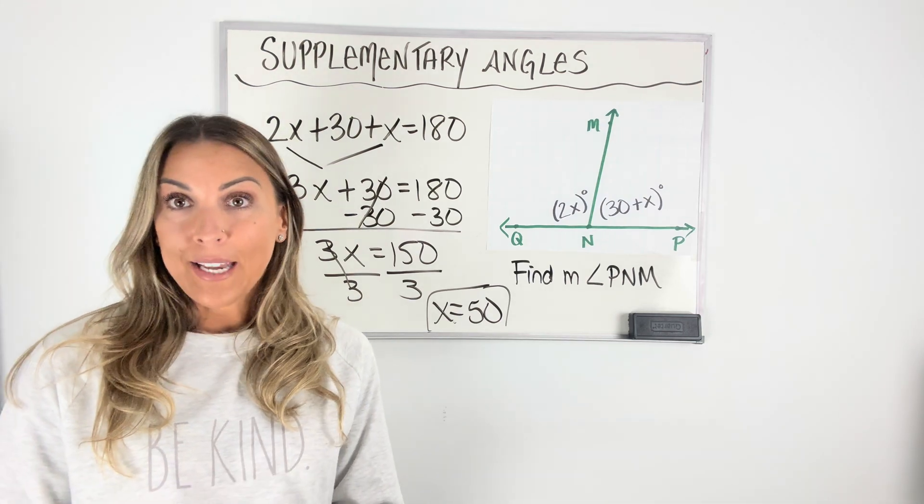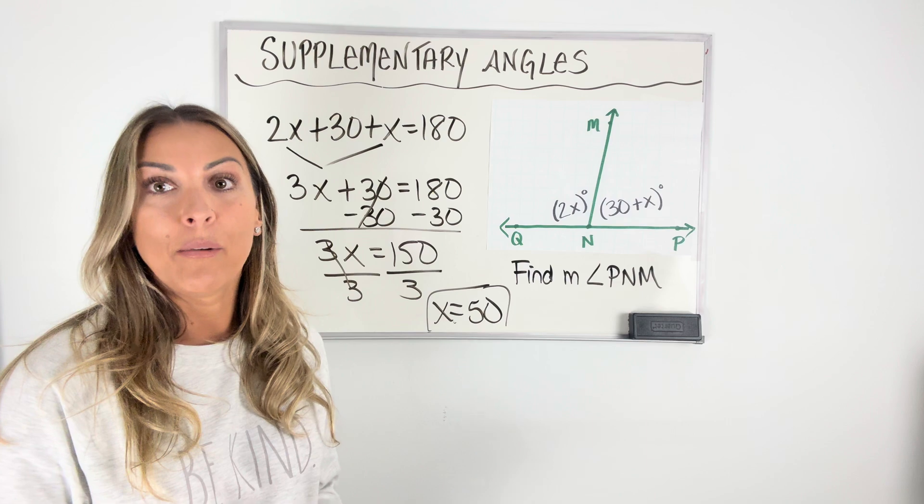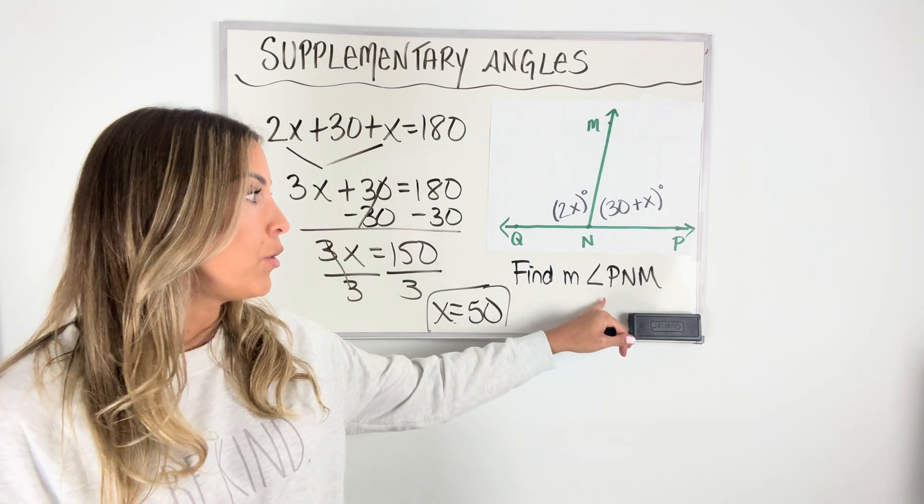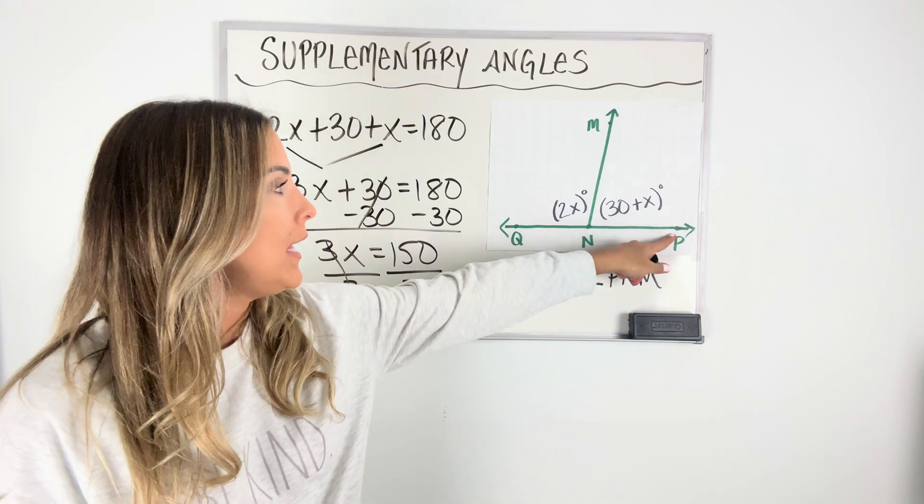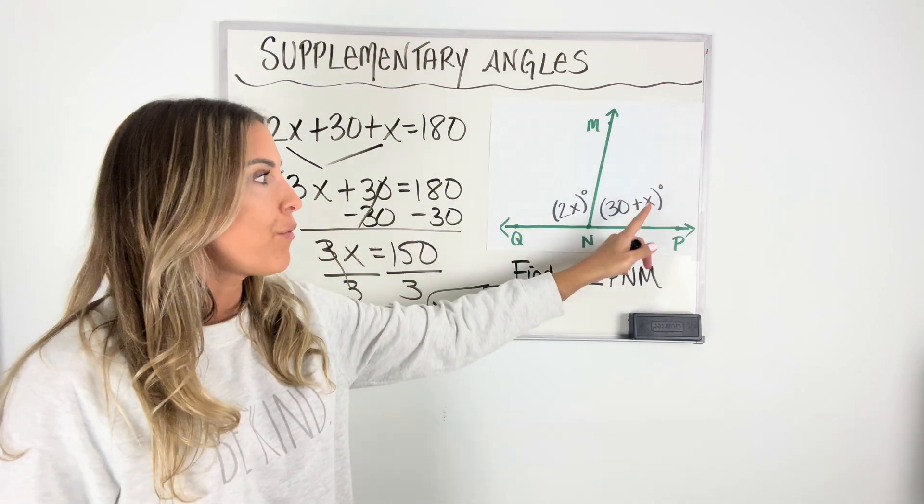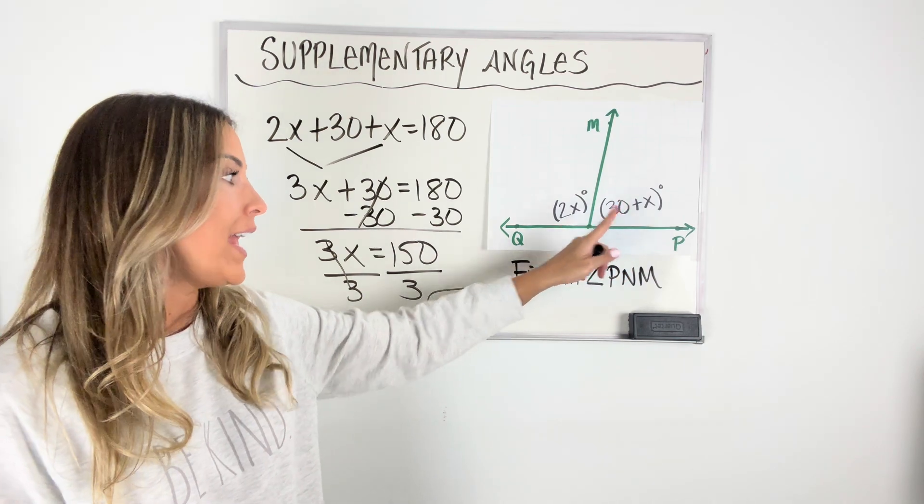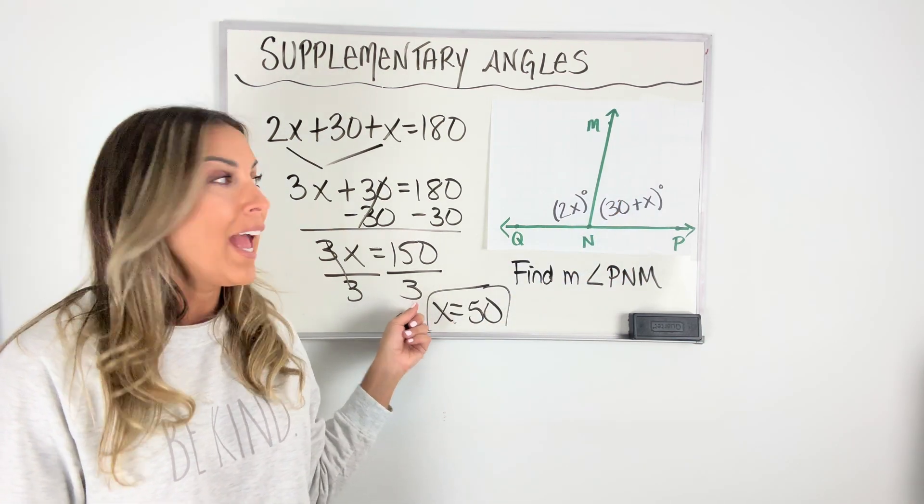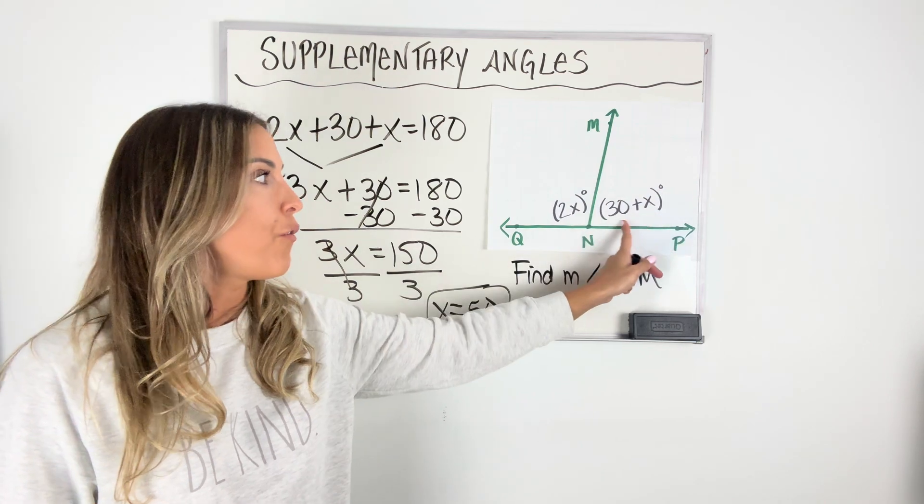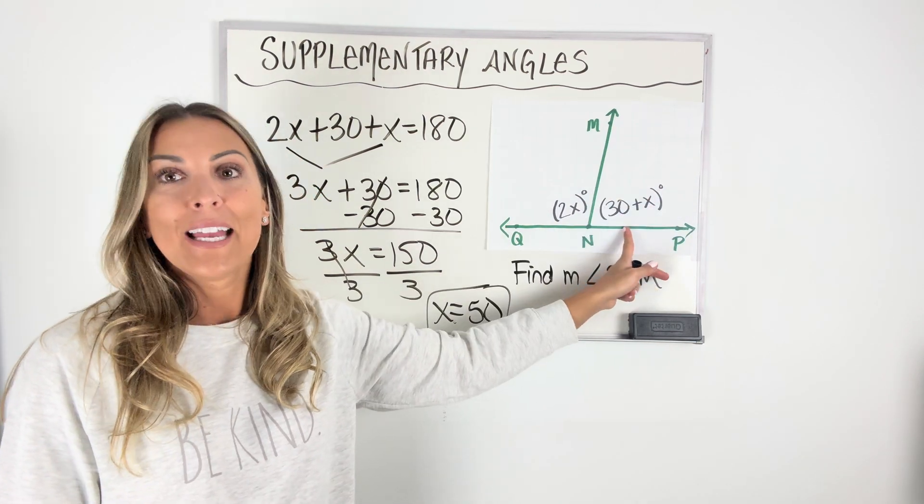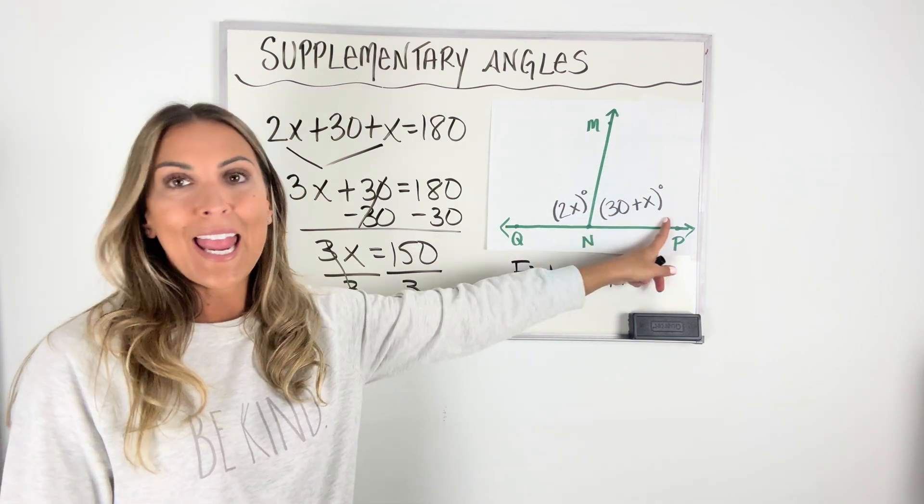If the problem was find X, I'd be done. My answer is 50. However, for this particular problem, it was not. It was find the measure of PNM. So angle PNM has a value of 30 plus X. So what do I have to do? I have to take the value that I found X to be and substitute it in here. So if X is 50, then the value of this expression here is 80. 30 plus 50 is 80. So this angle here is 80 degrees.